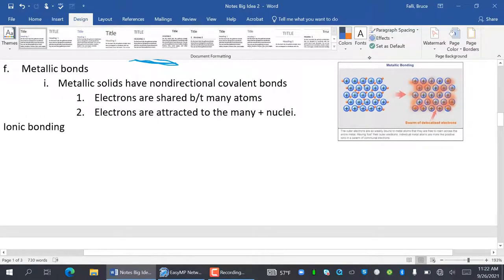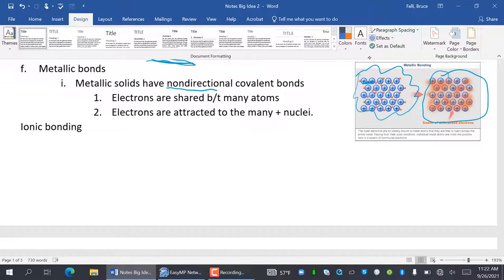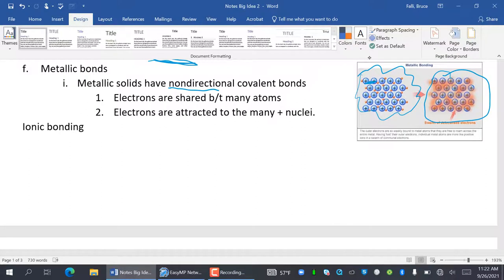Okay, metallic bonds. Metallic solids have non-directional covalent bonds. Non-directional means it's not between just two guys. It's not like this right here. That bond is not really what happens. So there's this cloud of electrons like here, and all of these positive guys are living the love of those negative electrons. So the electrons are attracted by the many positive nuclei, and the positive nuclei are attracted by the many electrons.